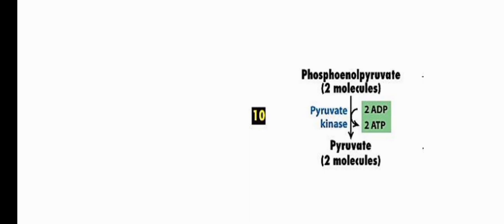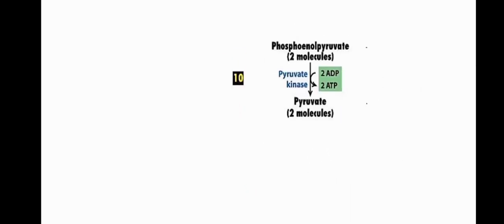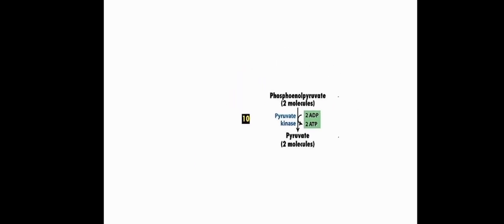In summary: steps 1 and 3 each consume one ATP, for a total of two ATPs used. Steps 7 and 10 each produce two ATPs (since everything runs as two molecules), for a total of four ATPs produced. The net gain is two ATPs per glucose. Additionally, NADH is produced, which will yield more energy when processed through the electron transport chain. Pyruvate then proceeds to the TCA cycle.